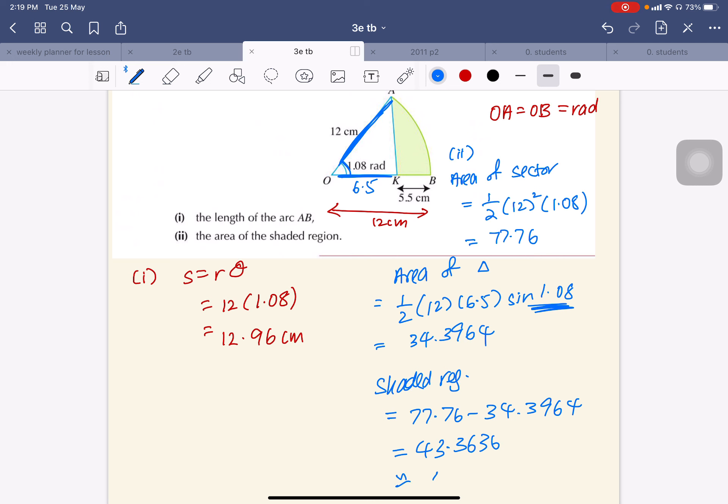To 3 significant figures, that's 43.4. I hope you are clear with this explanation.